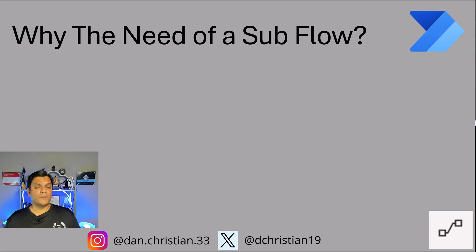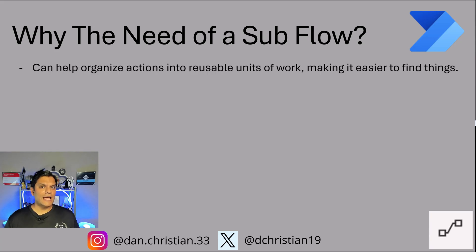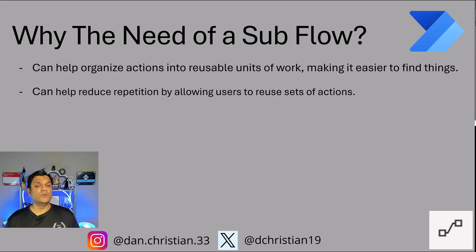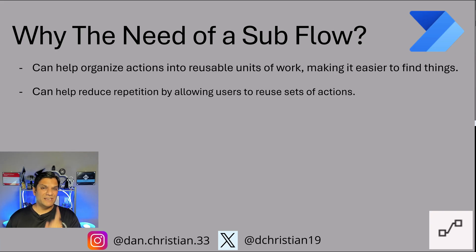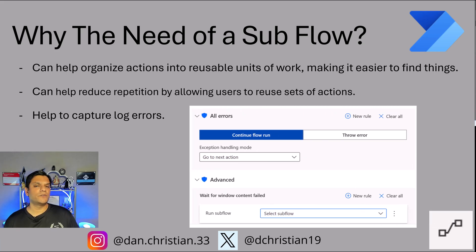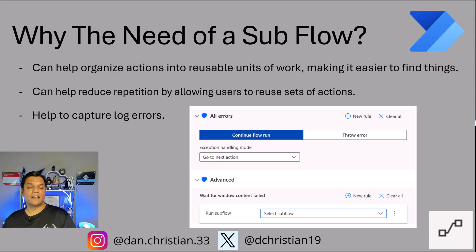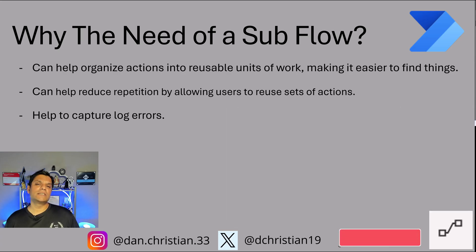Similarly, on the Sub Flow, which is for your Robotic Process Automation on your desktop, it really helps to organize all your actions into a separate flow, especially those which are reusable. You can also help reduce repetition by allowing users to reuse steps in a Sub Flow — if you've got steps that are constantly being repeated in your desktop flow, create that as a separate Sub Flow and call it in. One of the biggest uses is also to capture log errors: anytime an error occurs, you can log it by triggering a Sub Flow which captures all the information and stores it in another location.